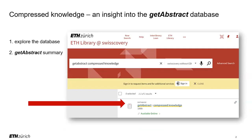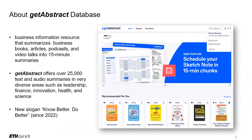I have divided my talk today into two parts. In the first part, I will show you the database content, and in the second part, I will give you information about the structure of a summary. We will start from the ATH library homepage, searching the database in Swiss Calgary. But before starting to explore the Get Abstract database, I would like to say a few words about the company.